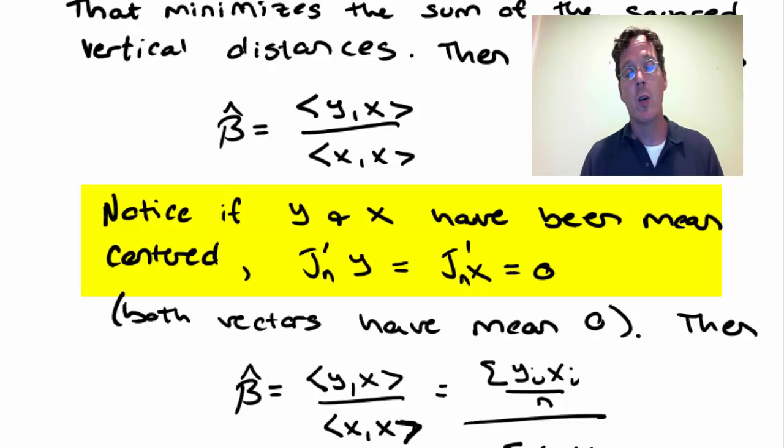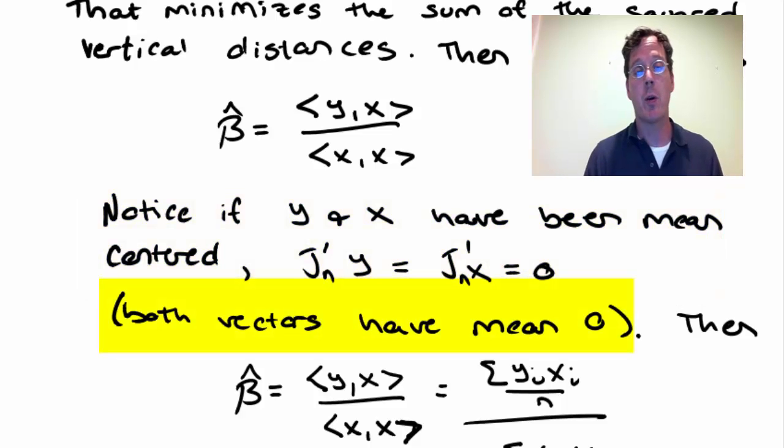Abusing notation, we're going to still treat y as if it's the vector that we're interested in, and x as the vector that we're interested in. We're just now going to assume that y bar and x bar are both 0. But remember, you can achieve this very easily for your data just by subtracting off the empirical mean from each of the two vectors.